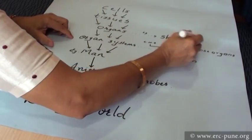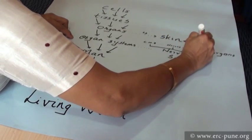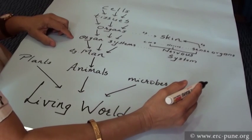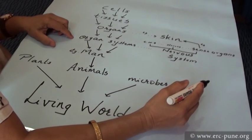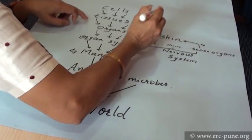Skin is an example of the sense organs. Which are the other sense organs? Eye, ear, nose, and the tongue. I am taking the example of skin. What is this skin made of?